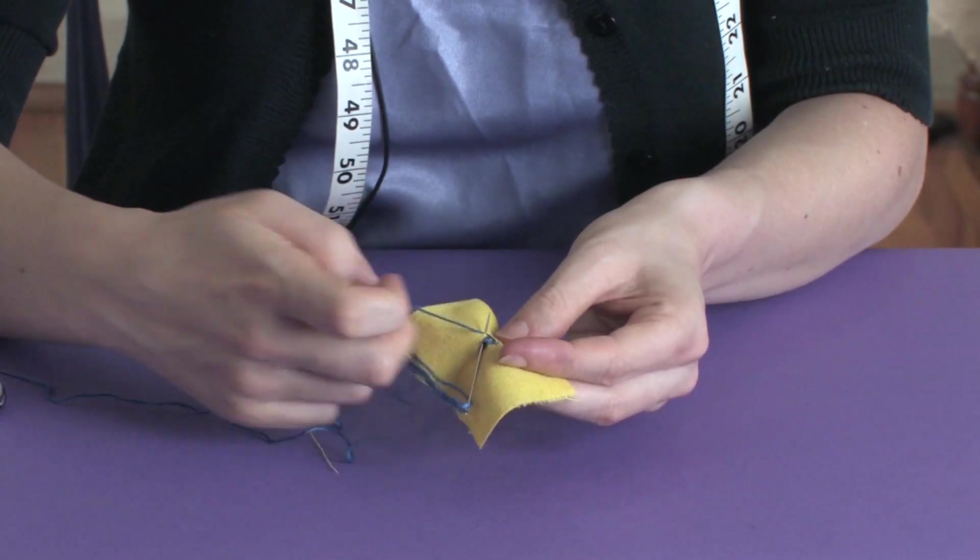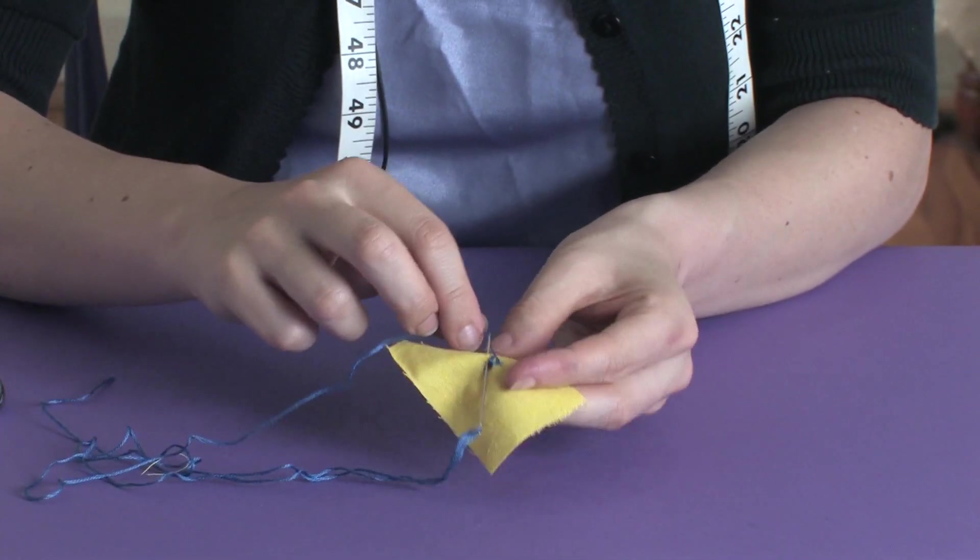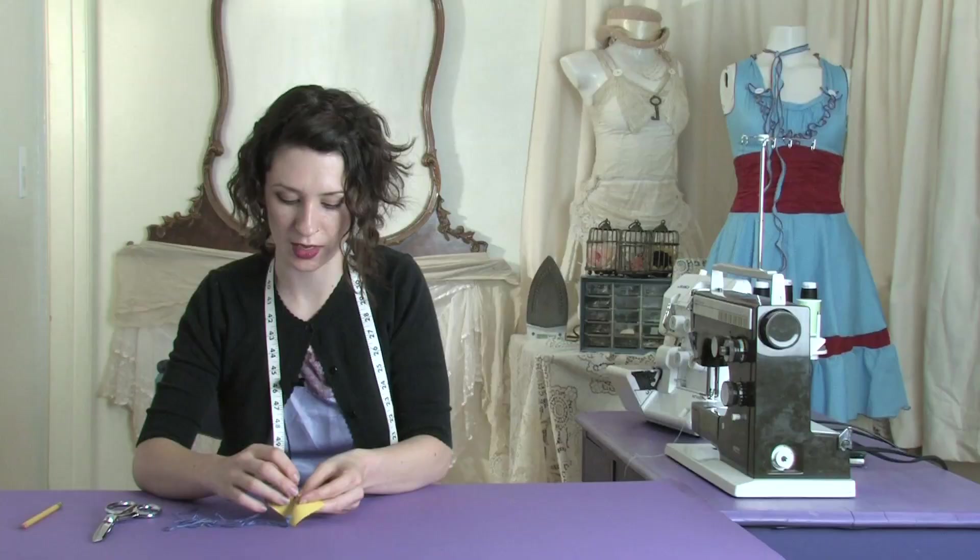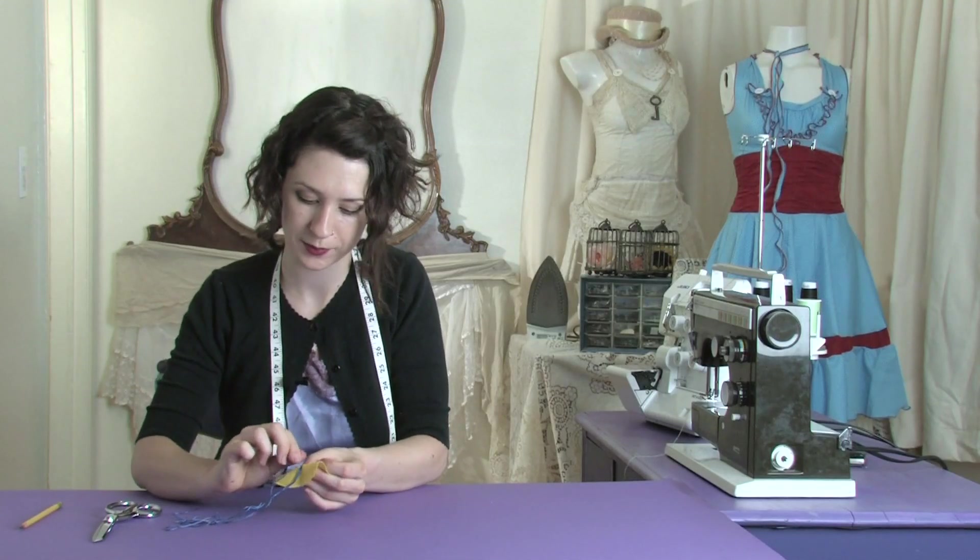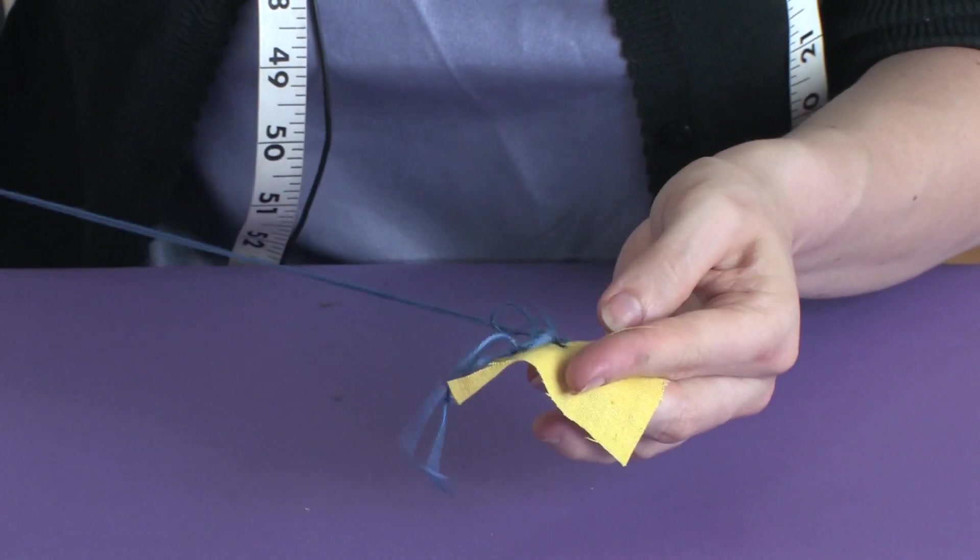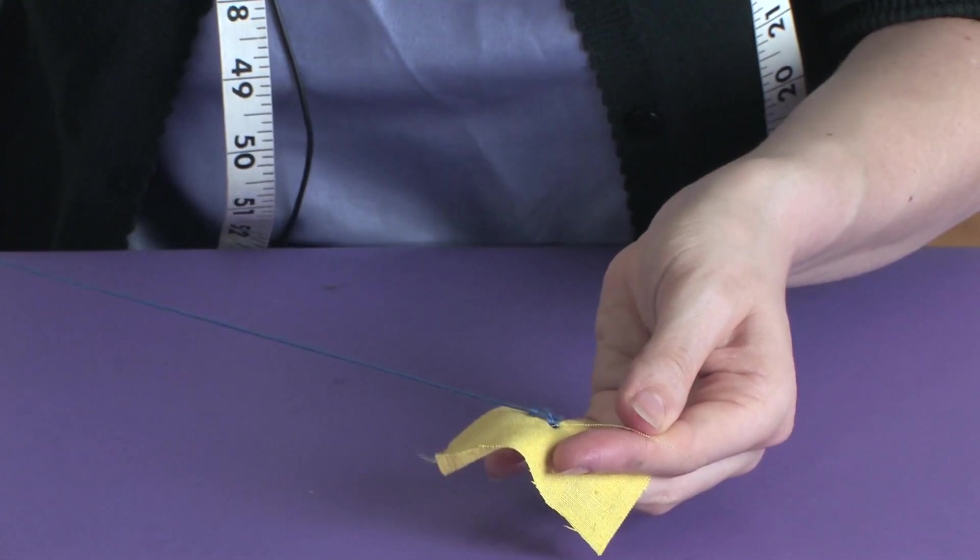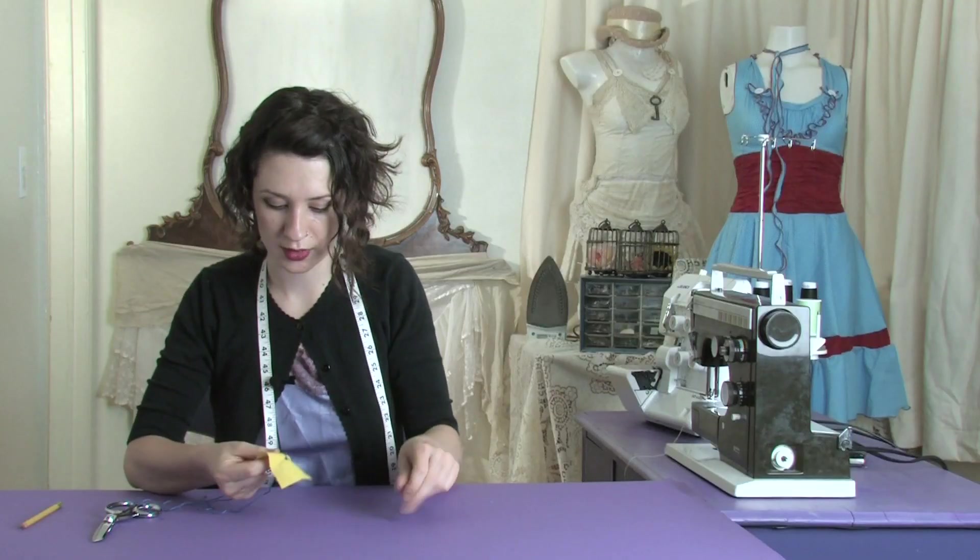Making sure that your thread from before is going right under that needle tip as it's coming back out of the fabric. Pull through and pull it tight.